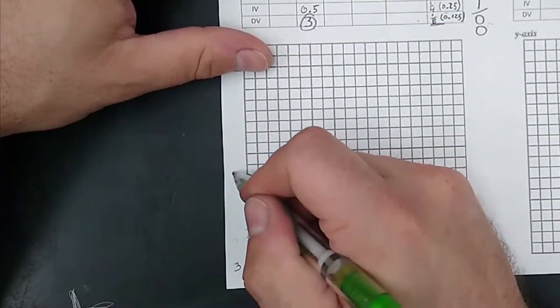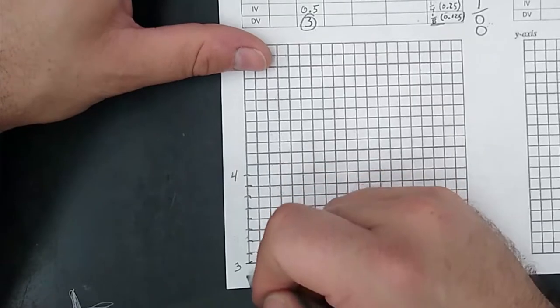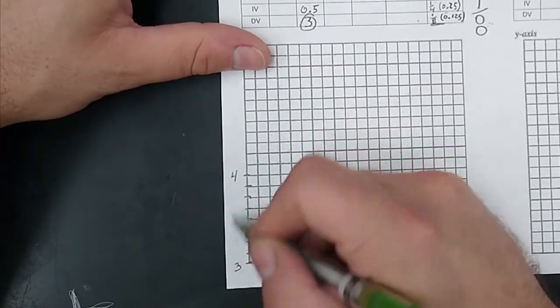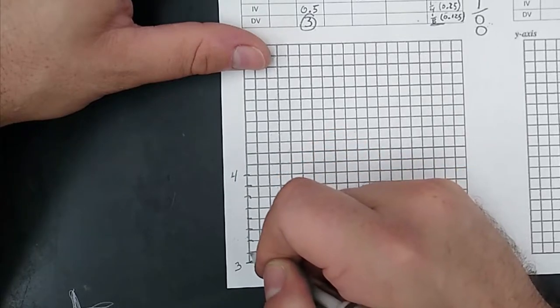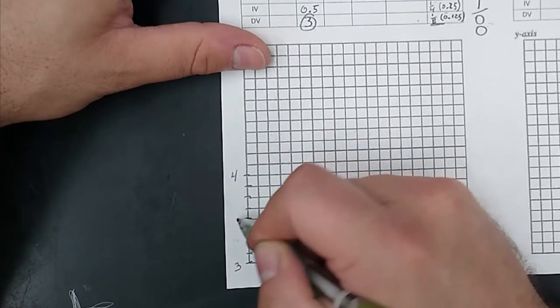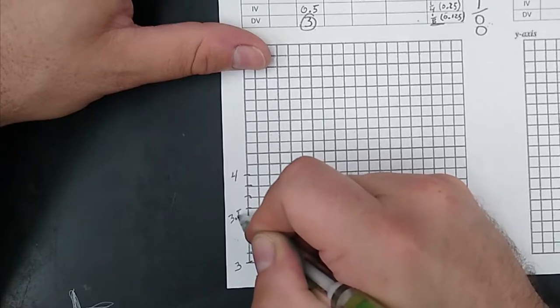So 3 plus 1 is 4. What's halfway in between 3 and 4? Well, that'd be 3 and a half. This is 8 lines, so 1, 2, 3, 4 lines up. That would be 3 and a half.